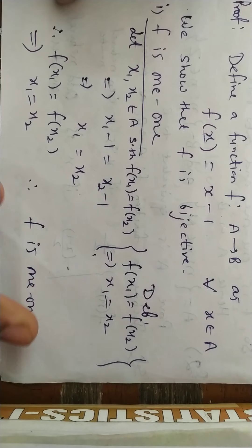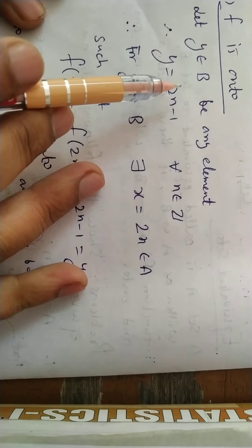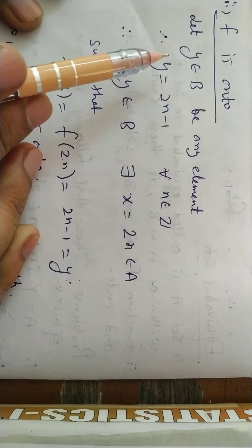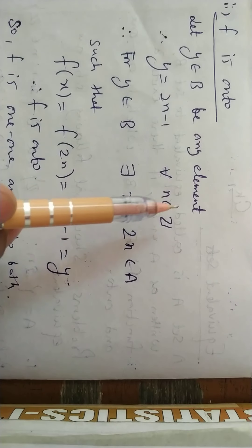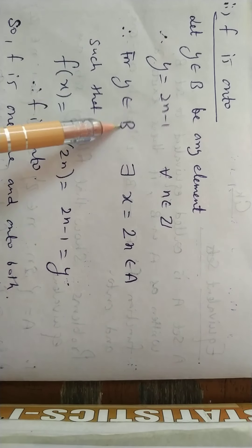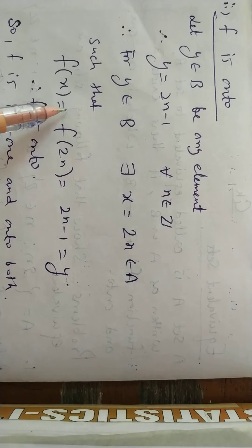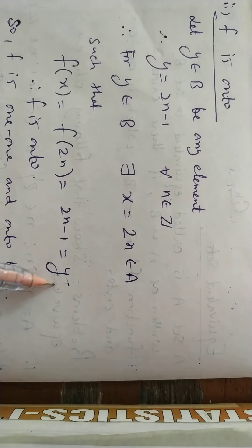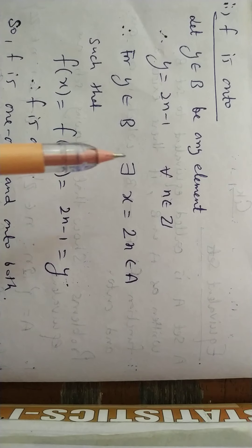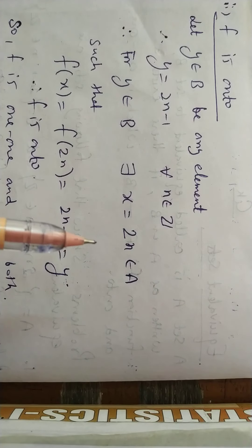Now in the second step, I will show that my f is onto. The technique for onto is that we always take one element from set B. Let y belong to B. Now the elements of set B are in the form 2n - 1 for all n belonging to integers. For y belonging to B, we say that there exists an x of the form 2n in set A, so that f(x) = f(2n) (putting 2n in place of x). The function was x - 1, so putting x = 2n gives 2n - 1, which equals y. This is simply the definition of onto: for y belonging to B, there exists x in A such that f(x) = y. So f is 1-1 and onto both.